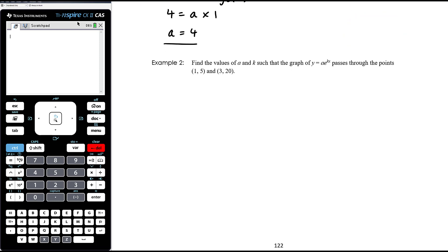OK, example two. Find the values of a and k such that the graph of y equals ae to the kx passes through the points 1, 5 and 3, 20. OK, so we've got two points and two unknowns. So we're going to sub our two points in. So when we sub 1, 5 in, y equals 5 when x equals 1. So that's going to be ae to the k. And the second point is 3, 20. So y is 20 when x is 3. So we get 20 equals ae to the 3k.